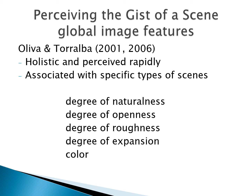So how are we getting the gist of a scene and allowing ourselves to identify the smaller objects within it? Oliver and Taralba have told us a great deal about perceiving the gist of a scene. They realized that one of the things helping us perceive the gist are global image features — processed very rapidly and holistically — associated with specific types of scenes. These include the degree of naturalness, the degree of openness, the degree of roughness, the degree of expansion, and the basic colors.